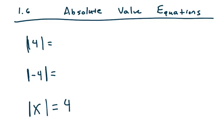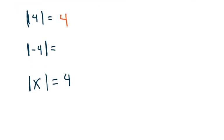Most people have some exposure to absolute value. If you took me for the previous course, we definitely spoke of absolute value. Most people see absolute value and say, what is absolute value? You make the number positive. So if you ask someone what is the absolute value of 4, they will say 4. And the absolute value of negative 4 is also 4, because we made it positive.